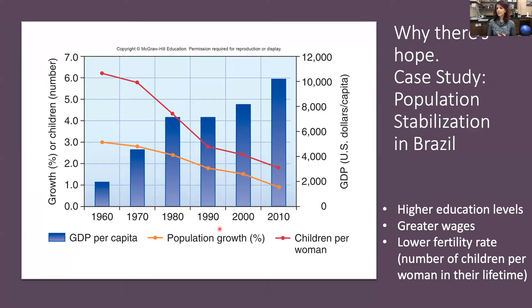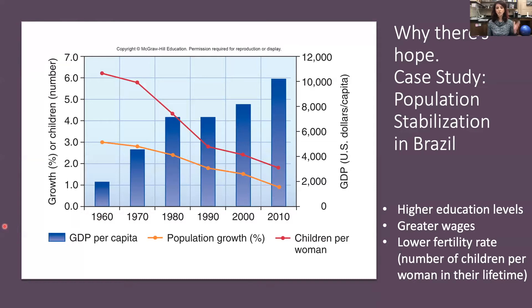From 1960 to 2010, we see an overall increase in the GDP per capita, represented by these bars. Coinciding with that increase in GDP, the children per woman outlined in red steeply declined, as well as a decrease in population growth outlined in orange. In 1960, the average wage in Brazil was less than $2,000 per year, only 19% of households had electricity — meaning TV was rare — and the average education for females was only two years. At that time, the average number of children per woman was 6.2.